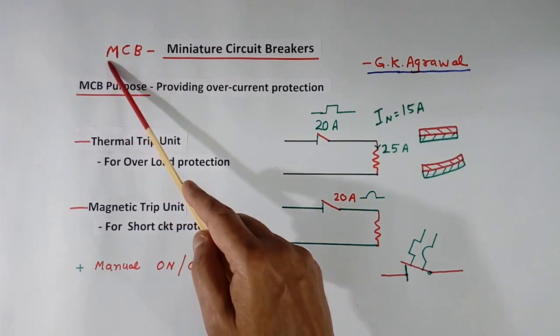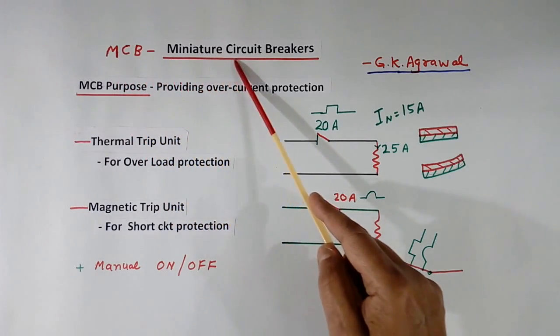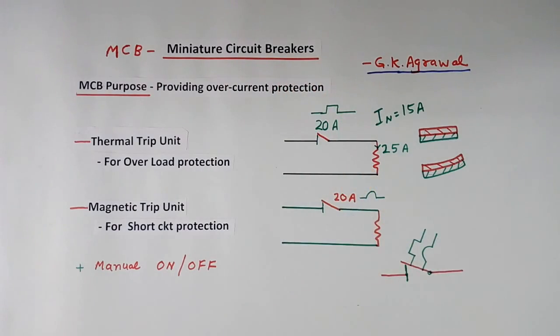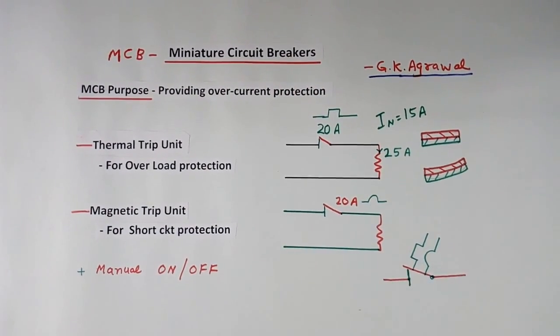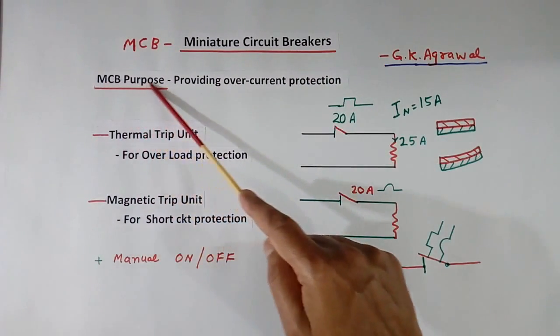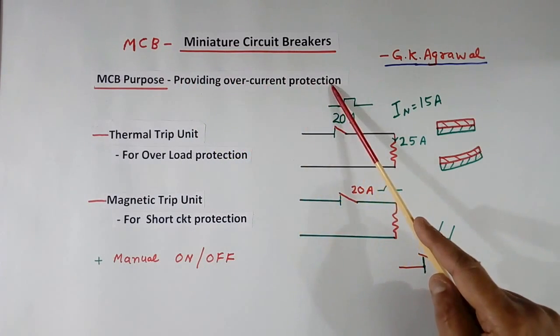Today I will explain about MCB - Miniature Circuit Breaker. MCB's main purpose is to provide over-current protection.